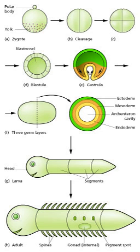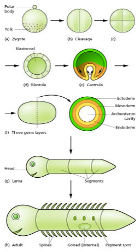Cell differentiation is the process whereby different functional cell types arise in development. For example, neurons, muscle fibers, and hepatocytes are well-known types of differentiated cell. Differentiated cells usually produce large amounts of a few proteins required for their specific function, giving them a characteristic appearance recognizable under the light microscope. The genes encoding these proteins are highly active; typically their chromatin structure is very open, allowing access for the transcription enzymes, and specific transcription factors bind to regulatory sequences in the DNA to activate gene expression.